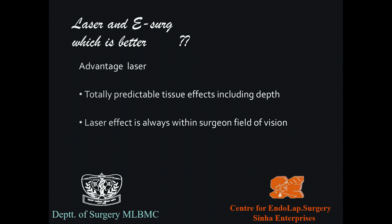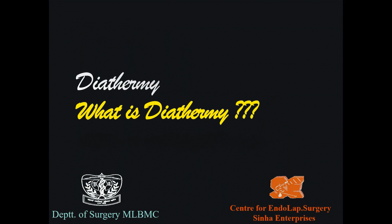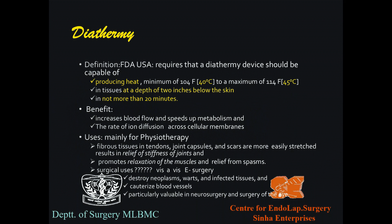A commonly misused term: in the OT staff say 'bring on the diathermy' meaning the electrosurgical unit — but that is wrong. Diathermy is defined by the US FDA as a device which produces heat between 40–45°C at a depth of two inches below the skin in not more than 20 minutes. Compare this with an electrosurgical unit which reaches up to 400°C. The benefit of diathermy is it increases blood flow and speeds metabolism and rate of ion diffusion across the membrane — it is stimulatory to healing.